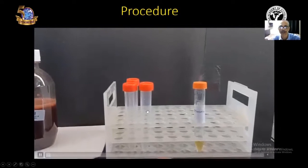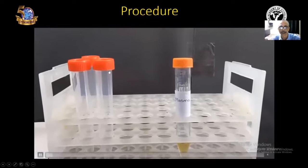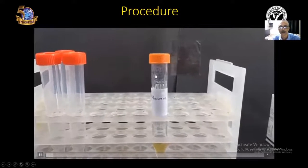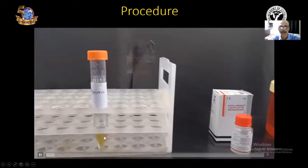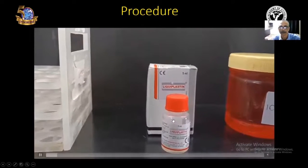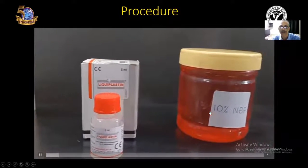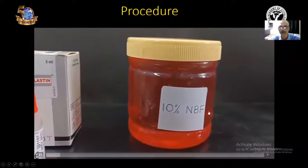Plastic centrifuge tubes of 15 ml capacity with screw caps, plasma taken in a test tube, thromboplastin, fixative for the cell block which is 10% neutral buffered formaldehyde.